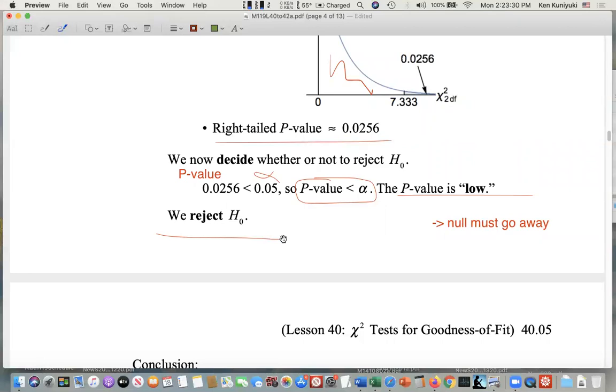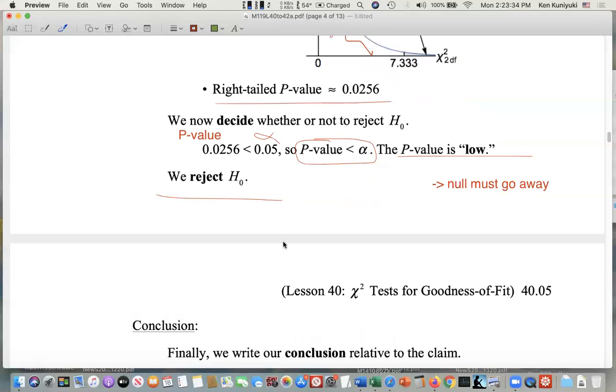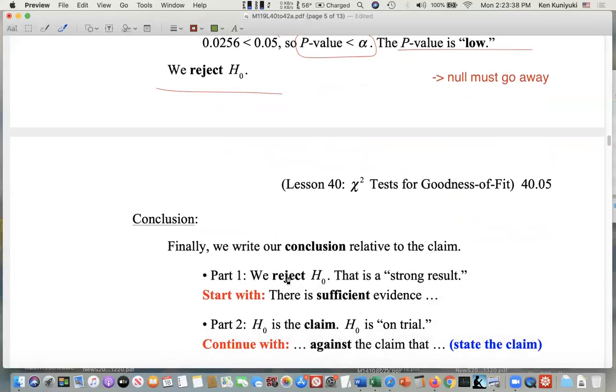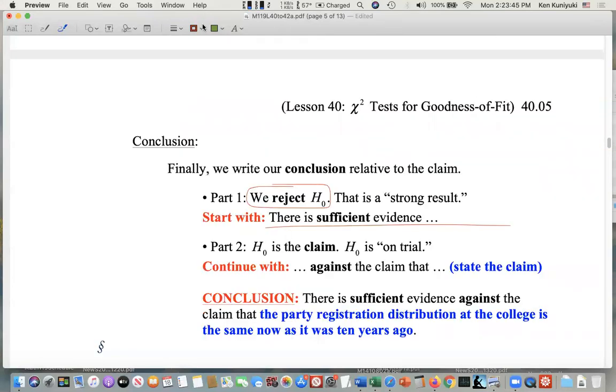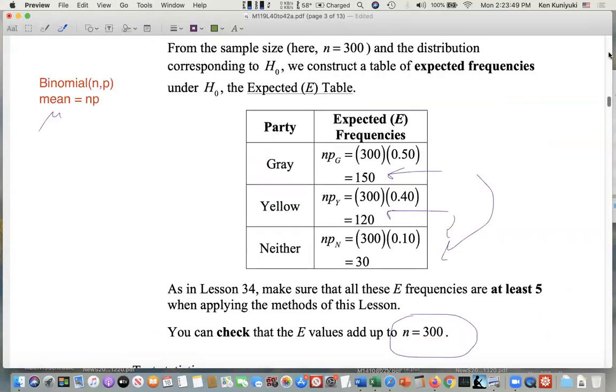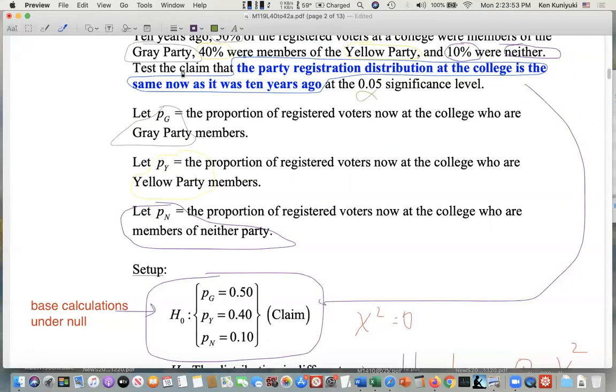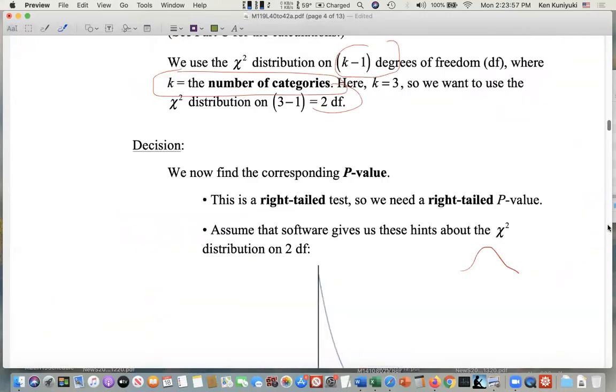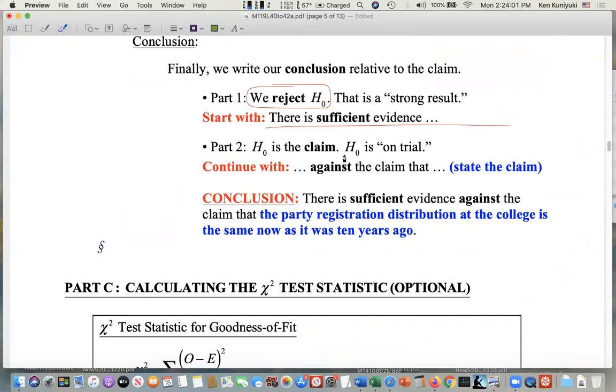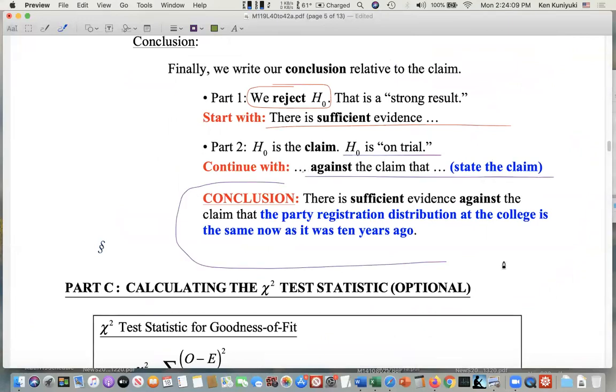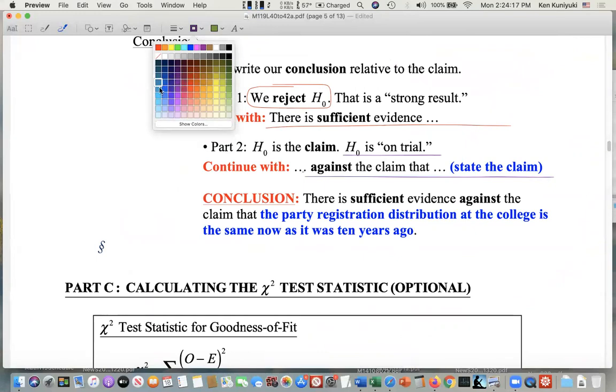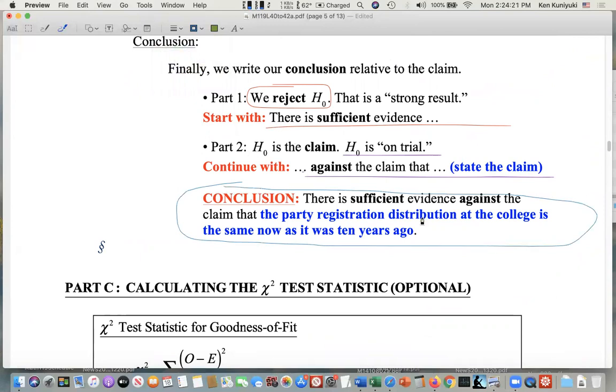Same old, same old. Is it strong or weak? That's strong, statistically significant. We can publish it. Finally, we write a conclusion relative to the claim. We reject the null. So that's a strong result. There is sufficient evidence to say what? Well, the claim was, in this problem, the null, based on the wording. The null is the claim based on the wording. The null is on trial, so we're weighing evidence against that null claim. There is sufficient evidence against the claim that the party registration distribution at the college is the same as it was 10 years ago.